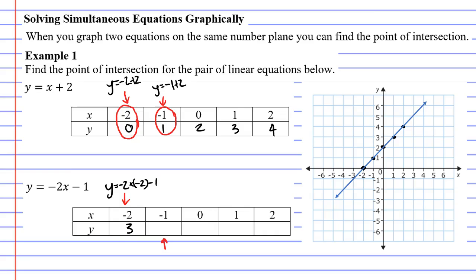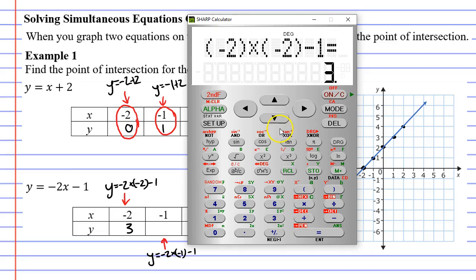Let's do the second column. This time x is negative one. So taking our equation y equals negative two times negative one this time minus one, we substitute this into the equation. Negative two times negative one minus one gives us one.